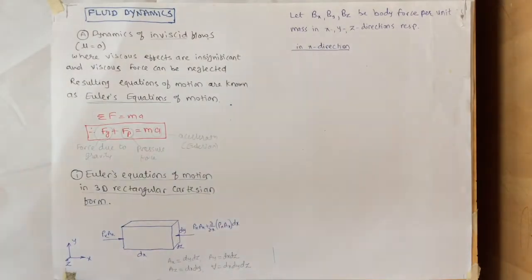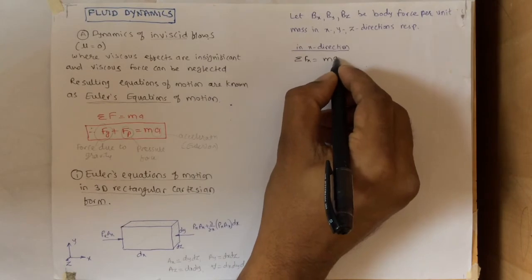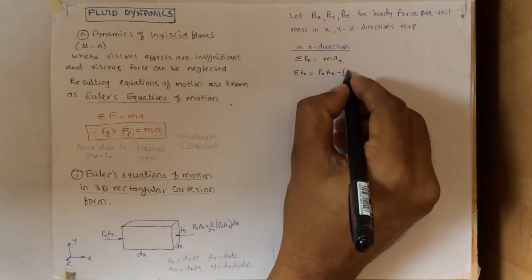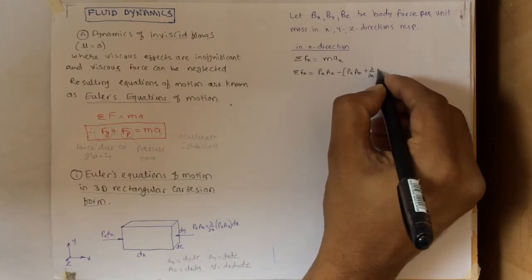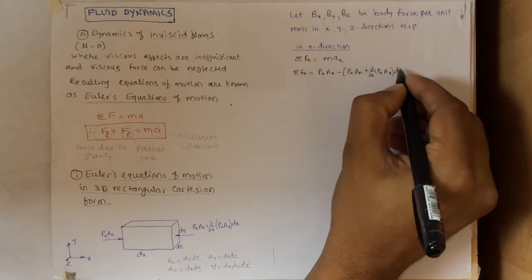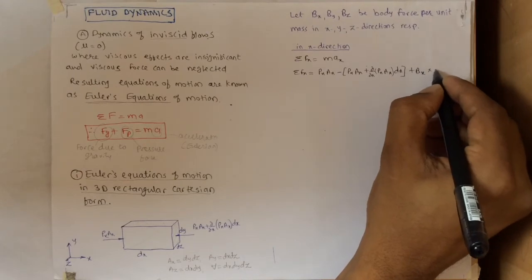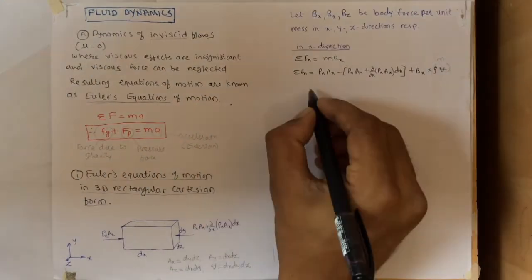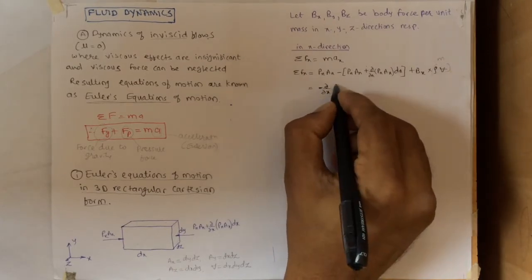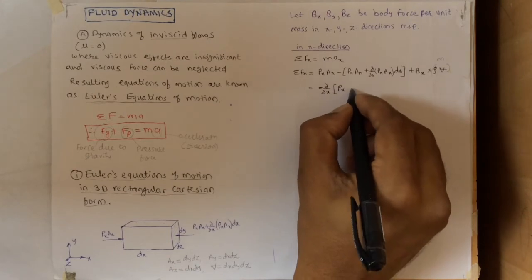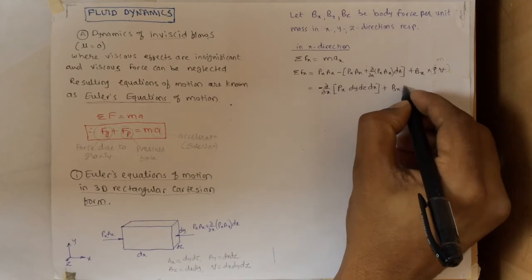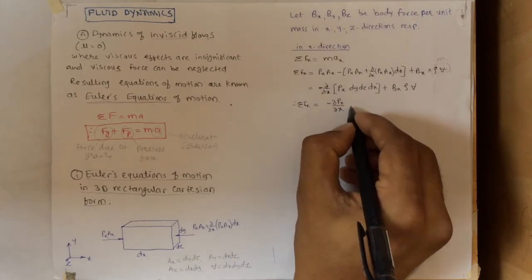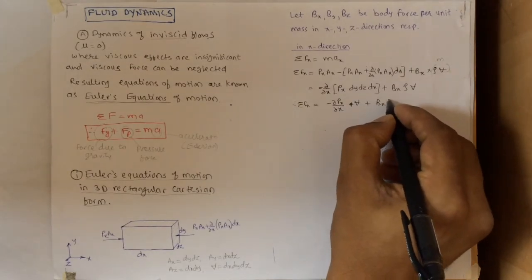In the x-direction we can write: summation Fx equals mass times acceleration in x, which is Ax. Let's solve for summation Fx first. Summation Fx equals Px·Ax, and since the pressure acting on the right-hand side of the element acts towards the left, it will be minus (Px·Ax + ∂(Px·Ax)/∂x · dx). Adding the body force — since bx is force per unit mass, the force is bx multiplied by mass, which is rho times volume. After simplifying, we get: summation Fx = −(∂Px/∂x)·Volume + bx·rho·Volume, where dy·dz·dx is the volume and rho is density.